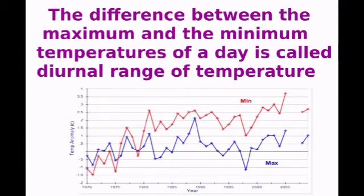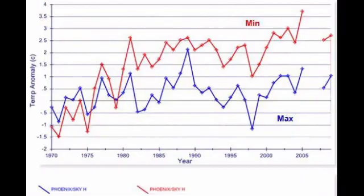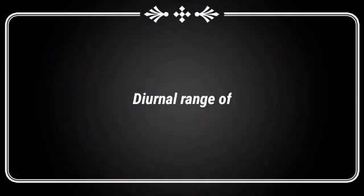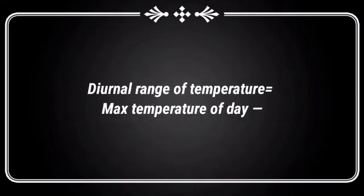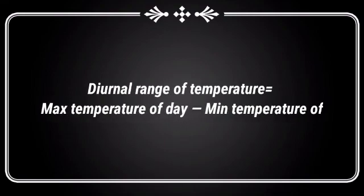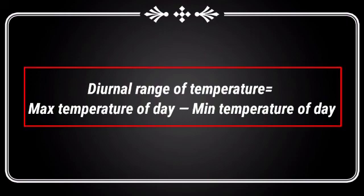The difference between the maximum and minimum temperature of a day is called the diurnal range of temperature. Diurnal range of temperature is equal to maximum temperature of the day minus minimum temperature of the day.